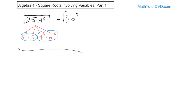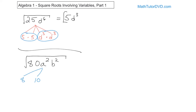Next: √(80a²b²). This one is a little more complicated because we have two variables, but you do exactly the same thing. For the numbers, 80 is 8 times 10. Then for a², that's a times a, and for b², that's b times b. So one level deep in the tree you have 8 times 10 times a times a times b times b — all multiplied together equals 80a²b². Now go one step deeper.